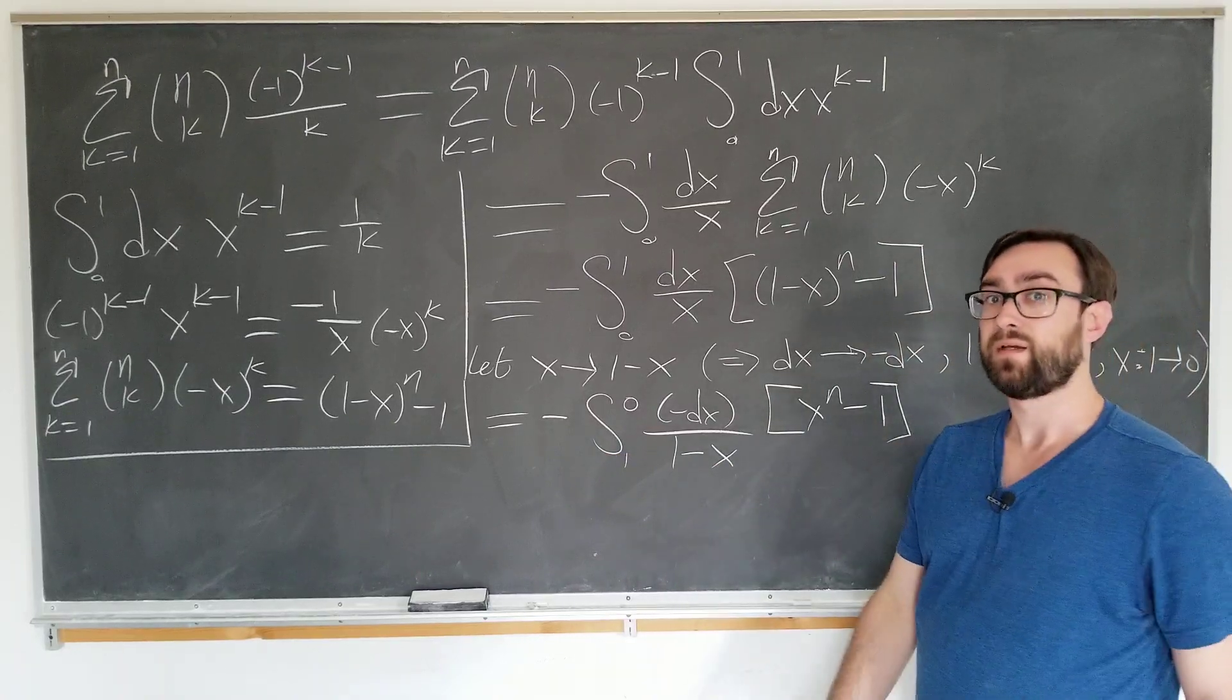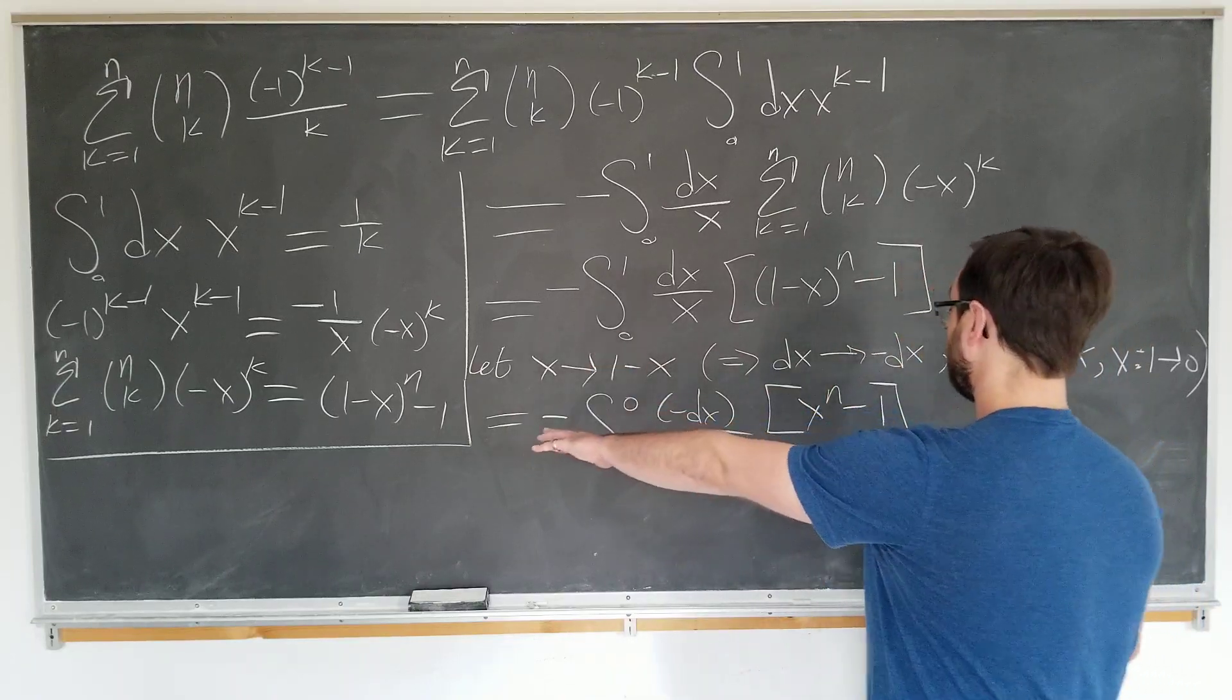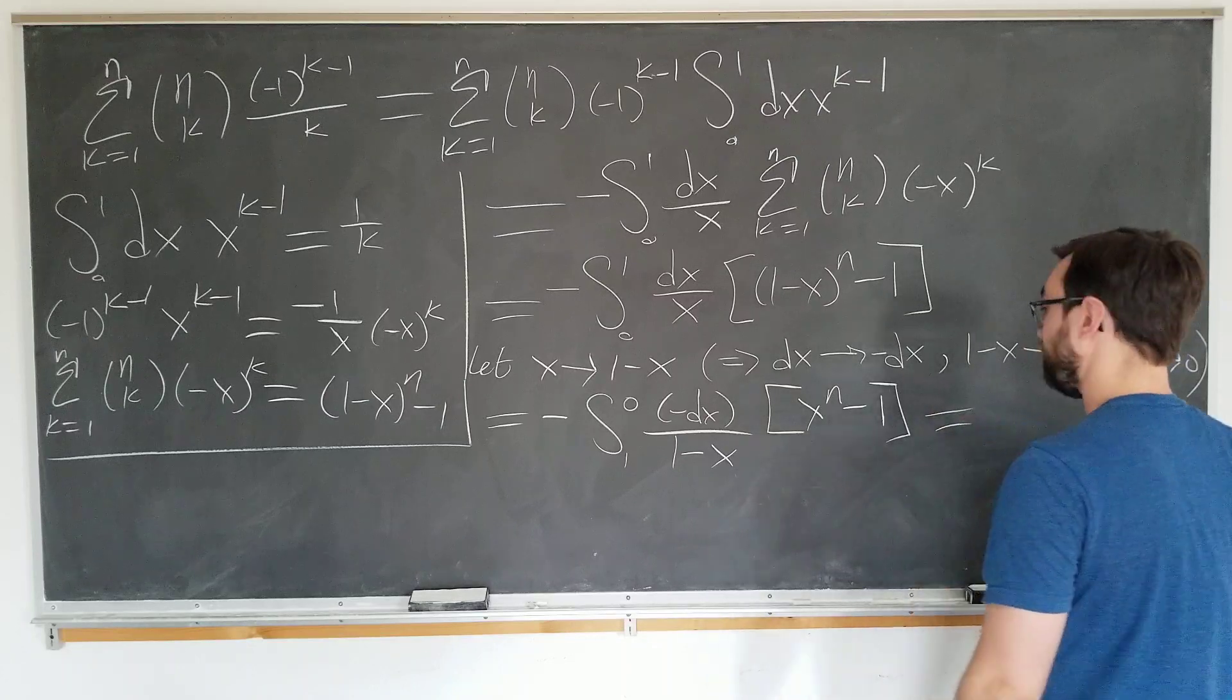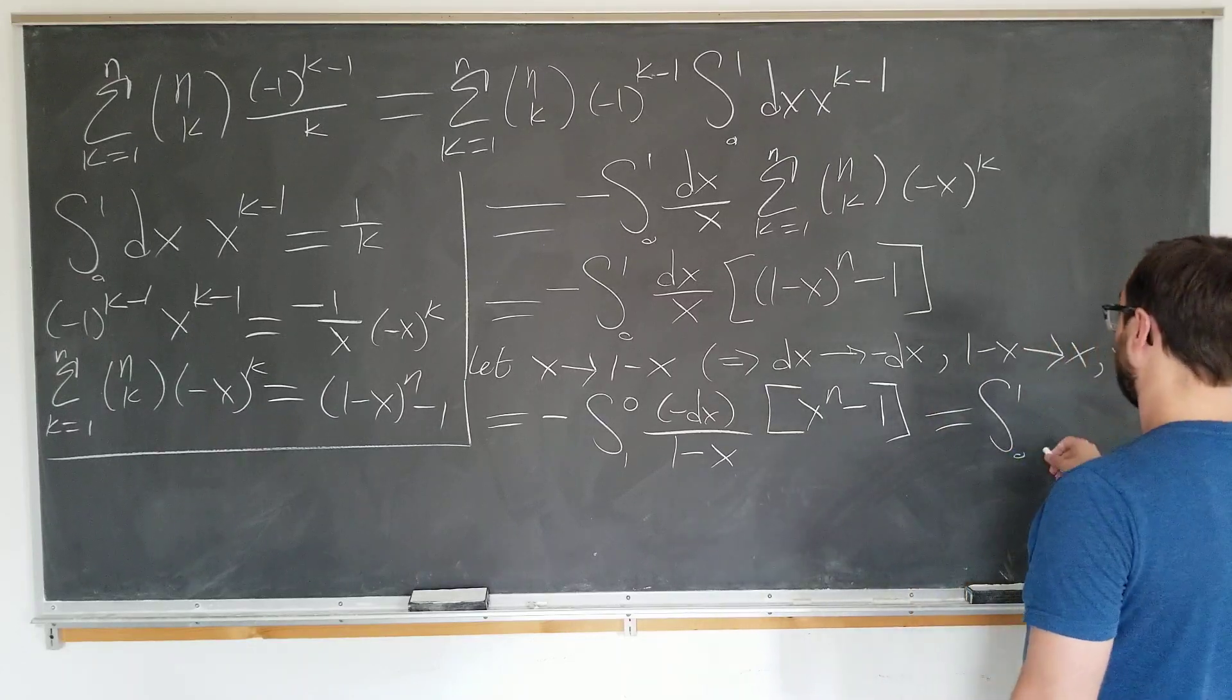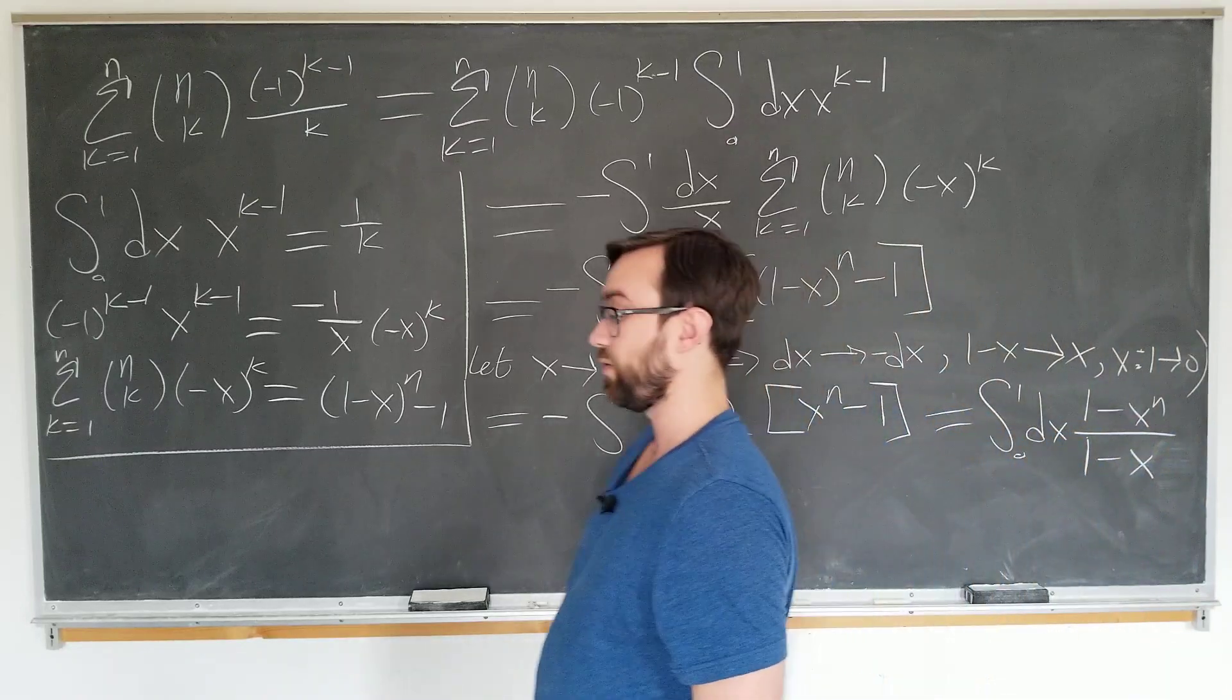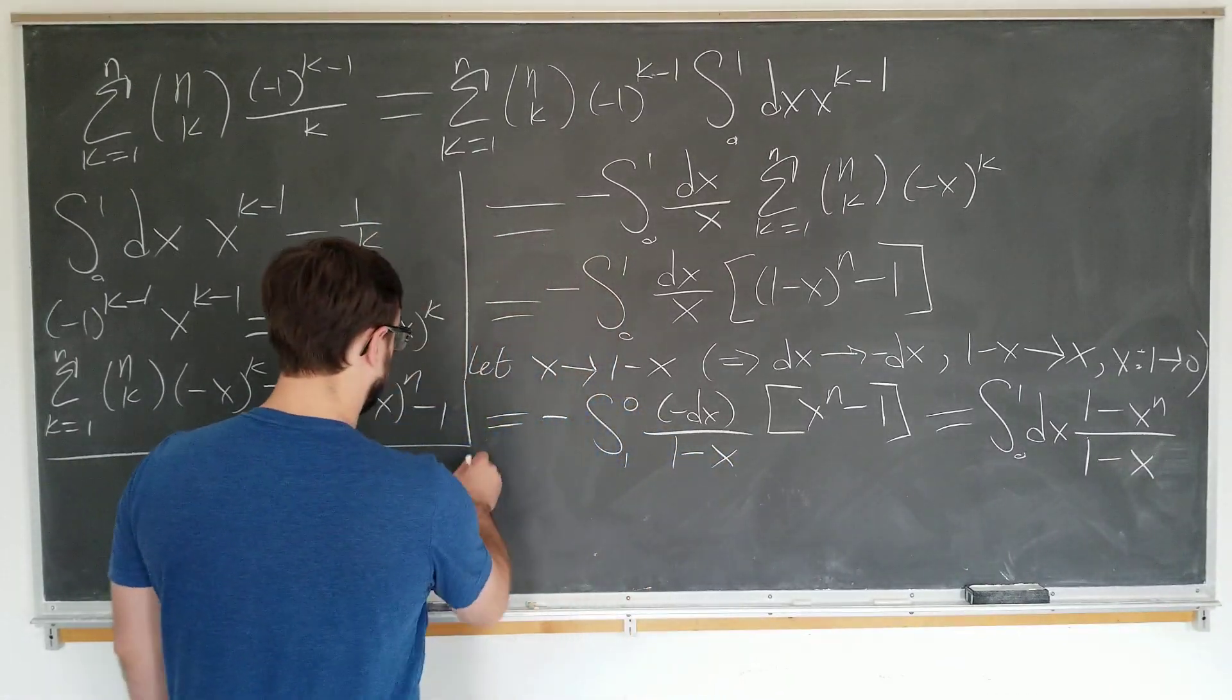And we're going to put it into this factor here so we're going to reverse the order of these factors so our final result becomes integral from zero to one with respect to x of one minus x to the n over one minus x, which to most viewers hopefully you should recognize the integrand as being nothing but a finite geometric series which we can readily integrate as follows.